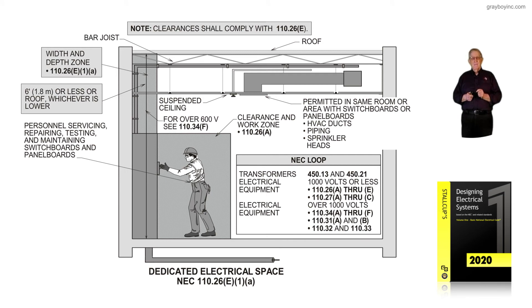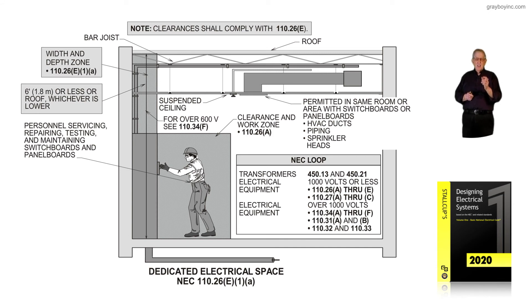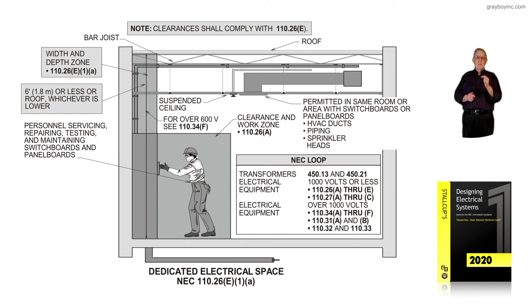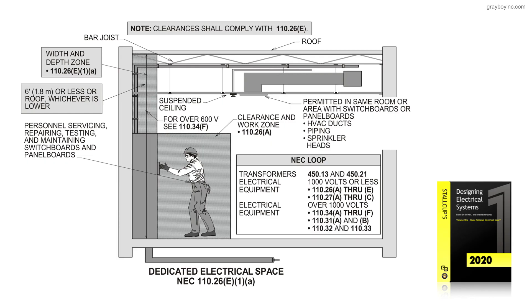Figure 5-10.1A simply deals with the dedicated electrical space above the equipment, but we also have space in front of the equipment. The gray-scaled information shows the six-foot above the equipment, the three-foot depth, and the width of the equipment. The six-and-a-half-foot headroom is based upon the height of the equipment because the equipment has a greater height than the electrician. That's what this figure is illustrating — the dedicated workspace in compliance with NEC 110.26E1A.